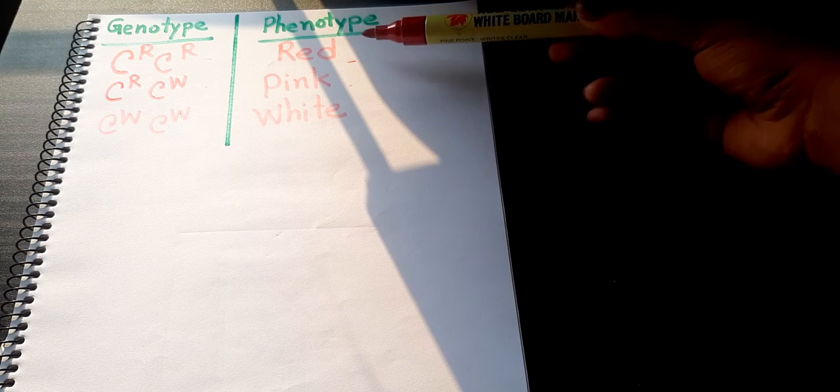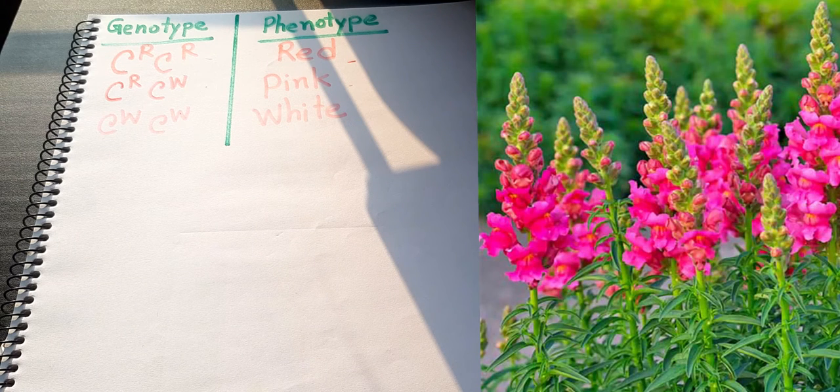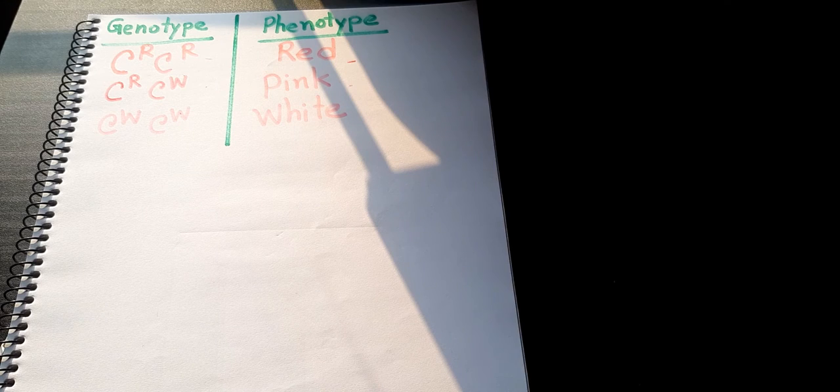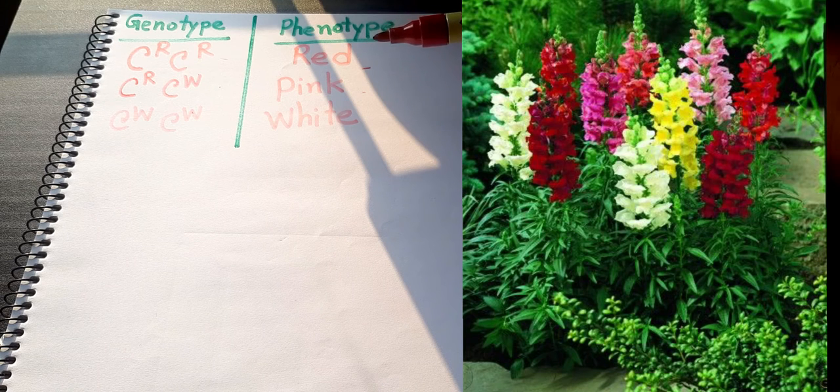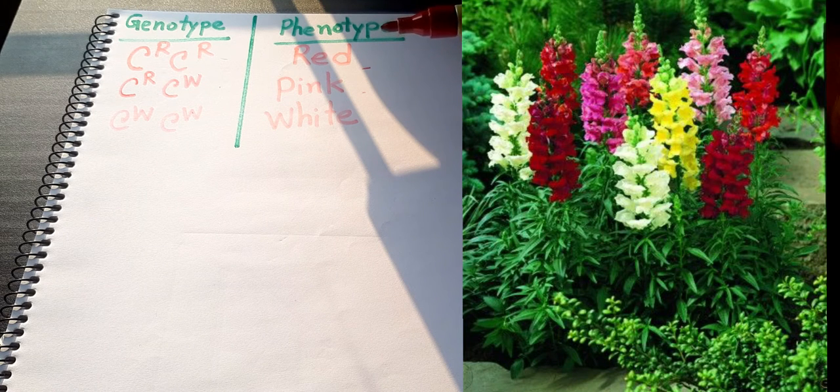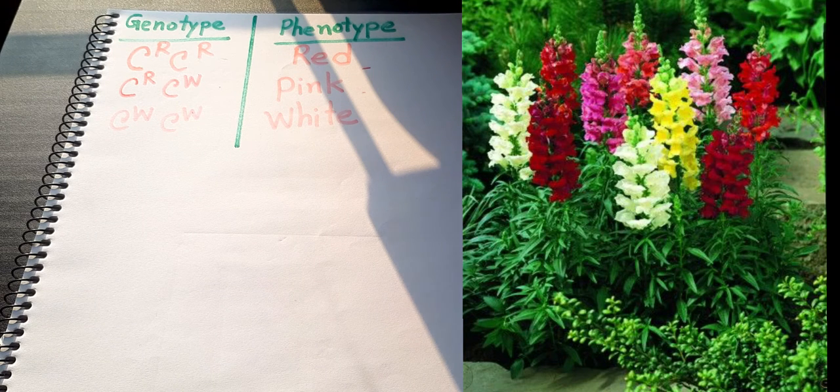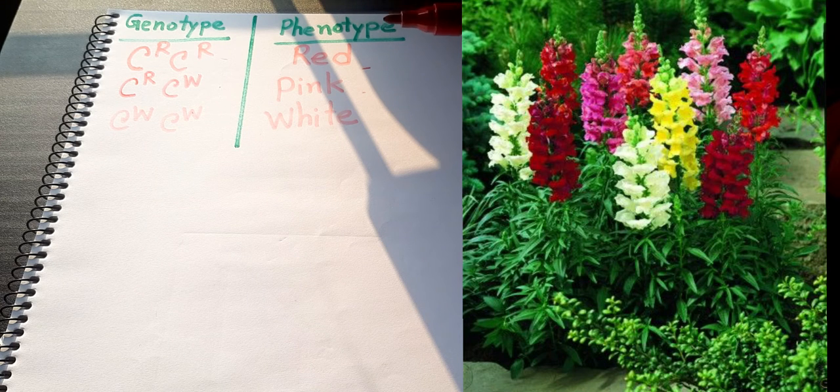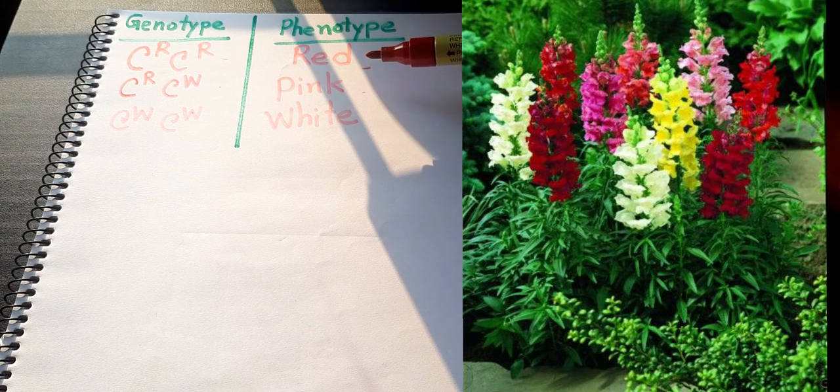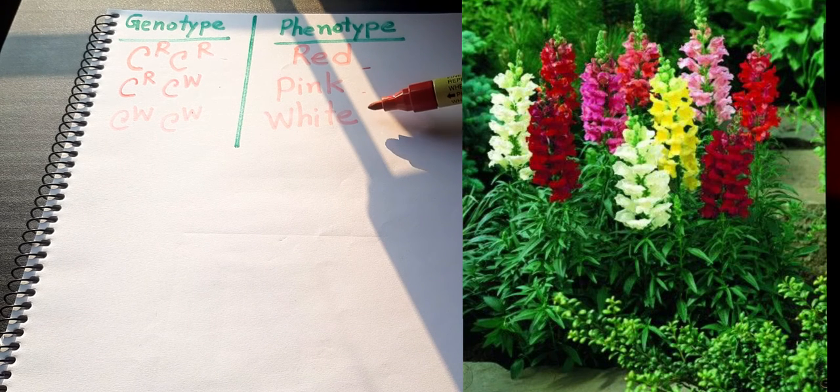For example, red, pink and white color. The organisms showing that is also related to environment and also related with gene. One of the genes for color, that is flower color, has two alleles. That is CR, which gives red flowers, and CW, which gives white flowers and the phenotype.